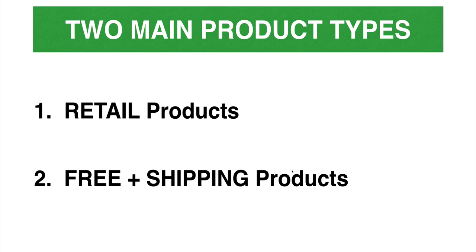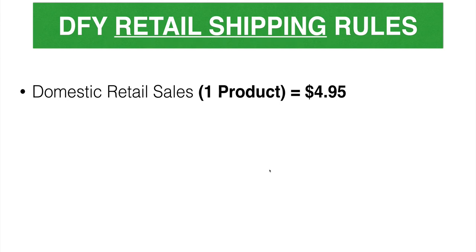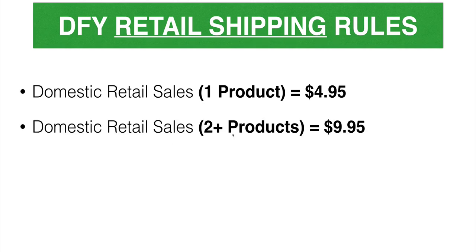I've already set up done-for-you shipping rules for retail items on my personal store. So number one: if someone domestically — for me that's in the United States — comes in and buys one product, we charge them $4.95 for shipping and handling, just a flat rate. If somebody comes in and buys two or more products from the US, then we charge them a flat rate of $9.95.